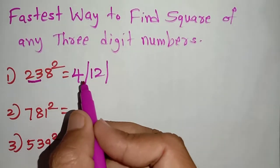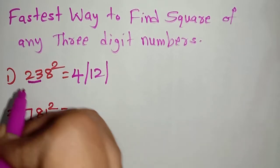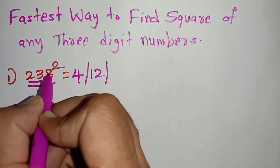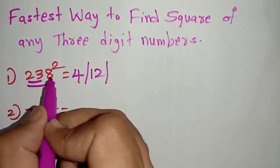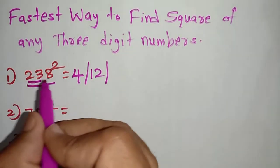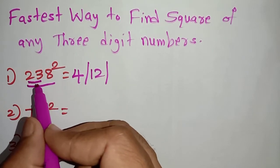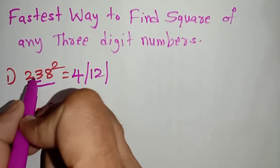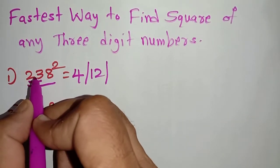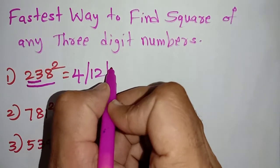The third step is we have to find the duplex of the first three digits — 2, 3, 8. To do this we have to multiply 2 into 8 first. 2 into 8 is 16, and 16 into 2 is 32. Then we have to add the square of the middle number: 32 plus 3 squared is 32 plus 9, which becomes 41.